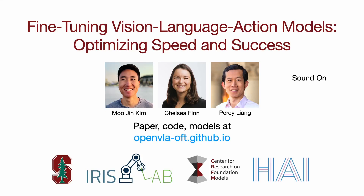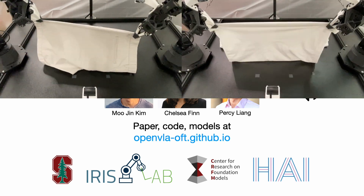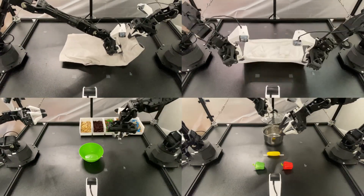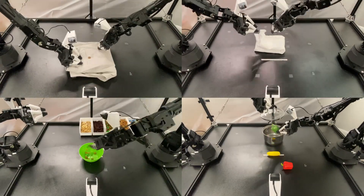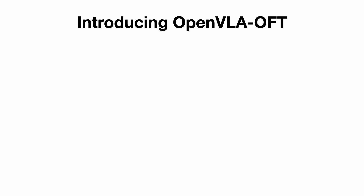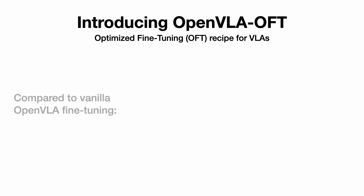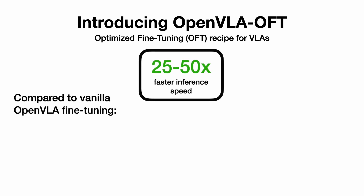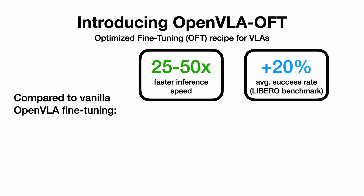In this work, we introduce OpenVLA-OFT, a new optimized fine-tuning recipe for VLAs. Compared to the original OpenVLA fine-tuning recipe, OFT enables 25 to 50 times faster inference speed and improves average success rate by 20% in the Libero simulation benchmark, achieving state-of-the-art results.